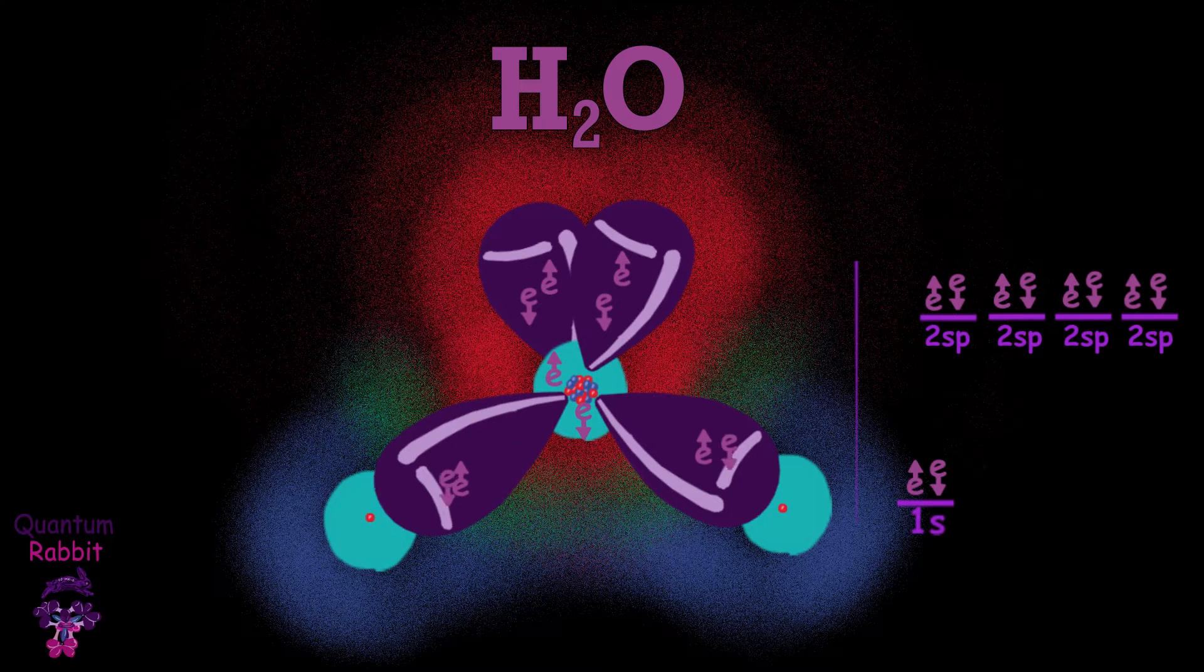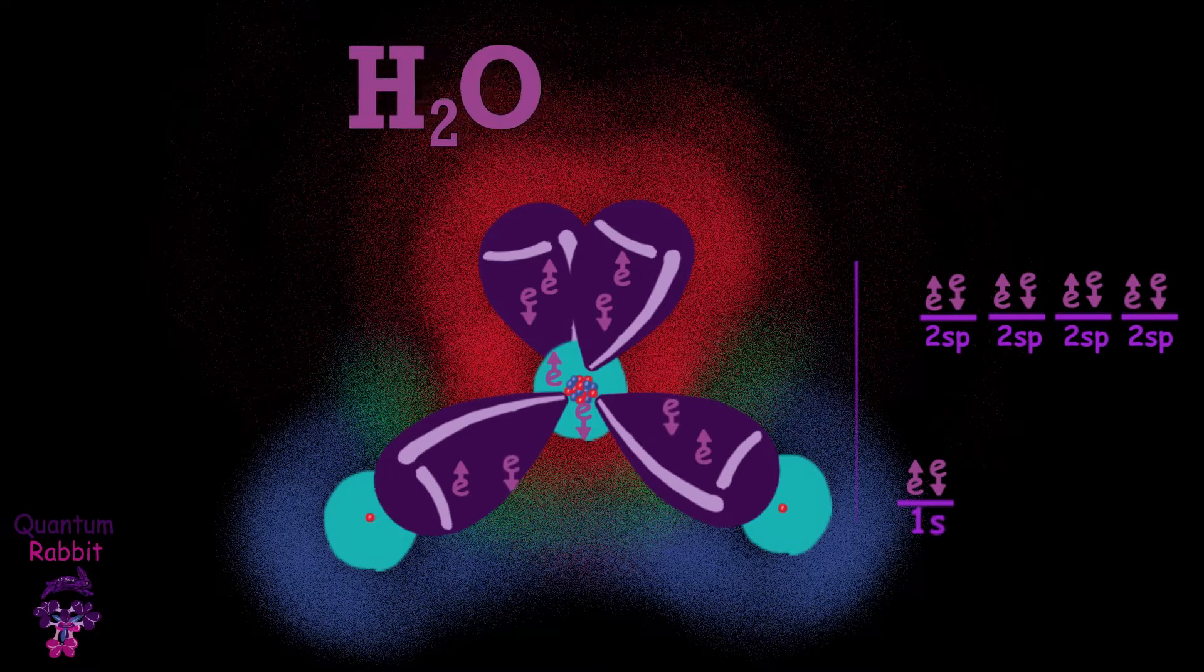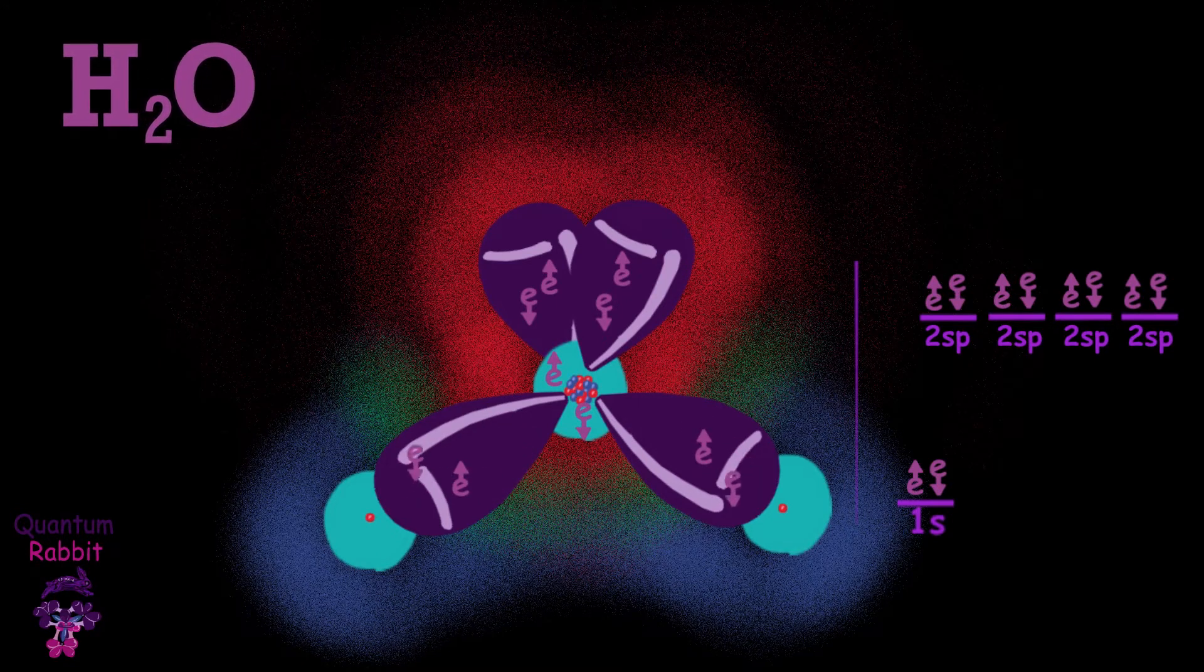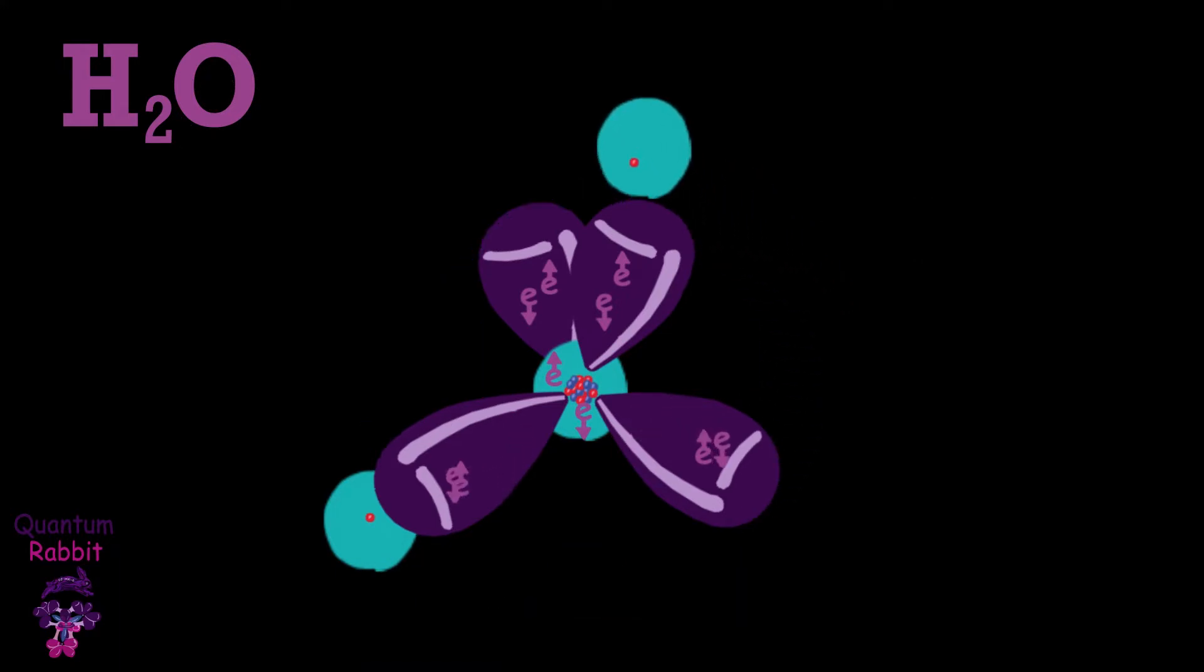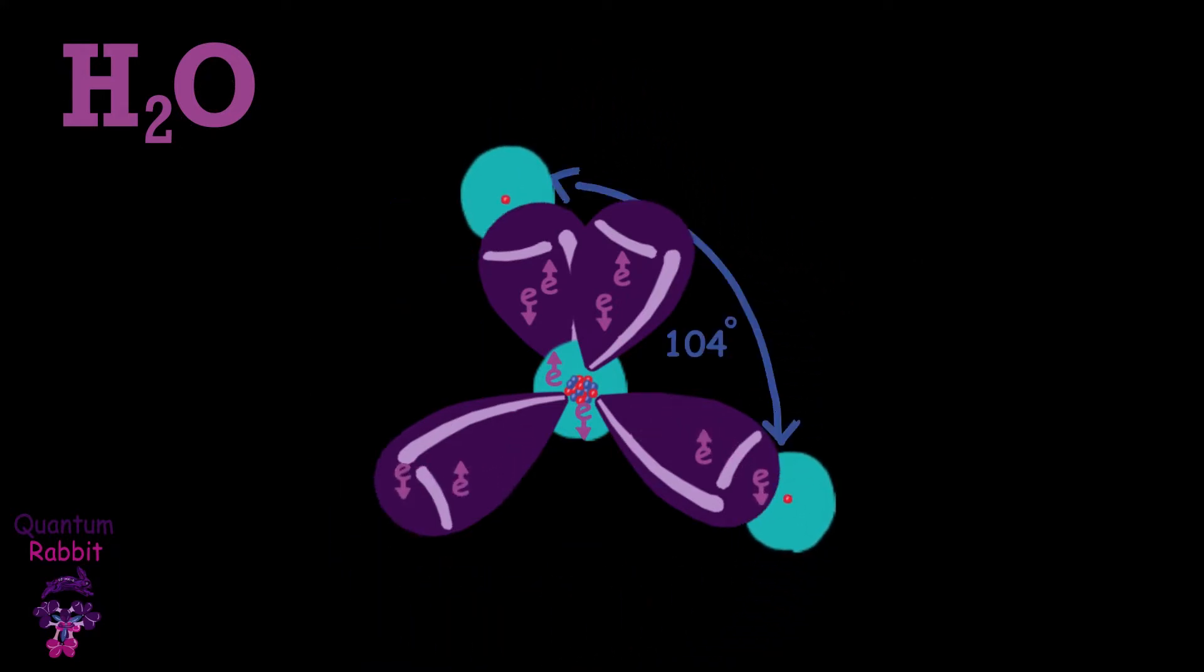This is represented in the animation by red and blue colors. Something important to note is that no matter in which orbital the hydrogens bind, they are always positioned at an angle of 104 degrees.